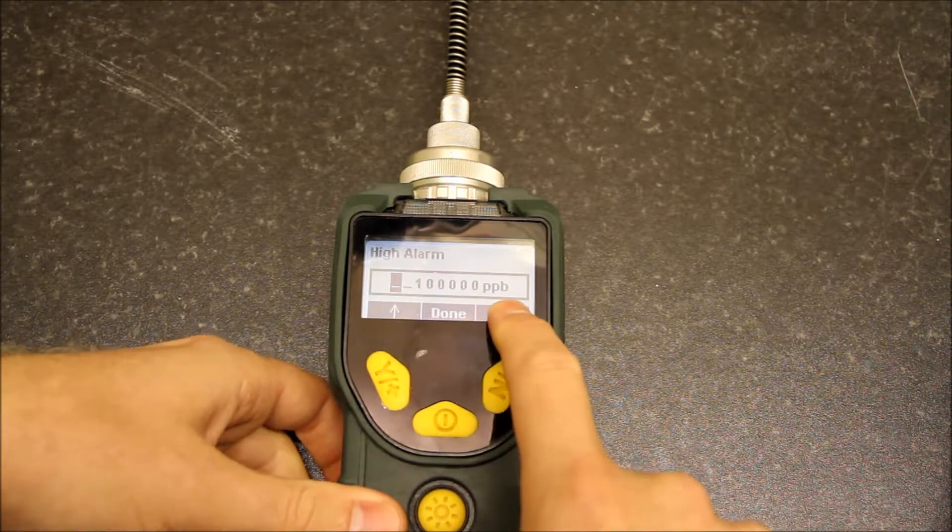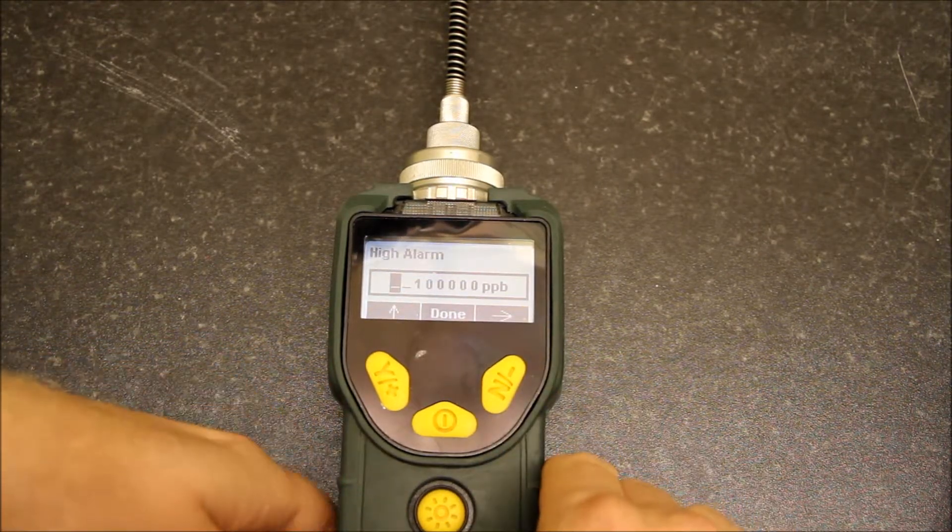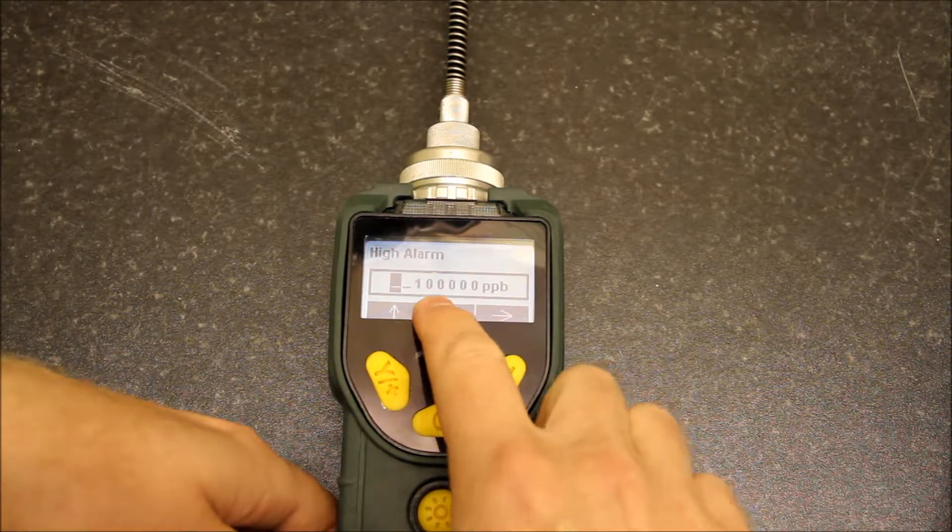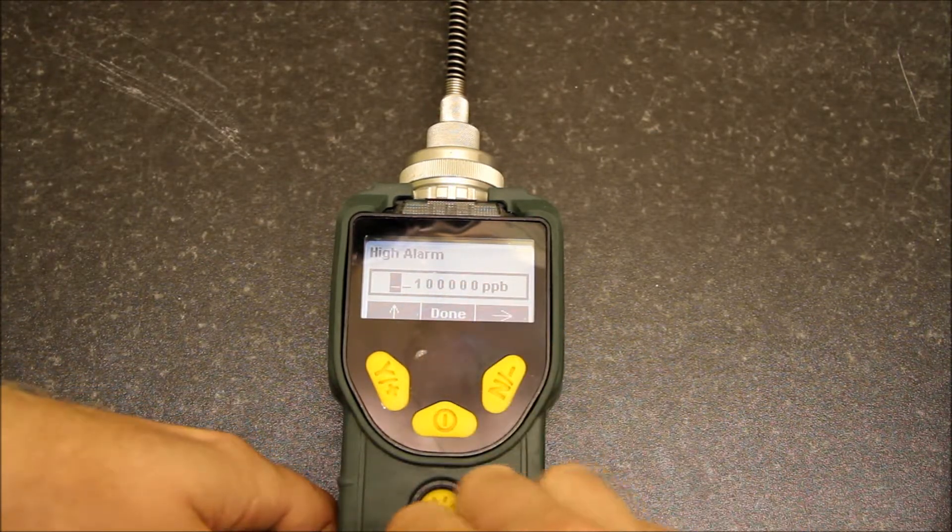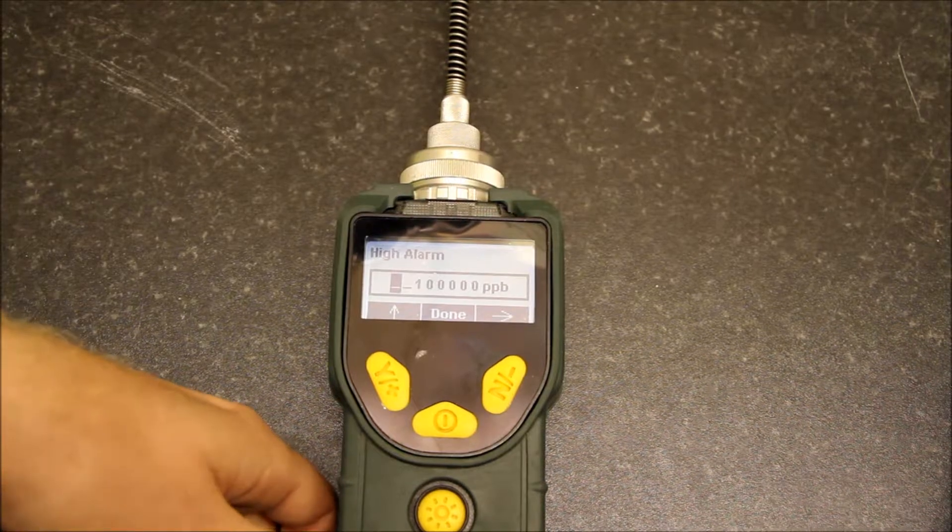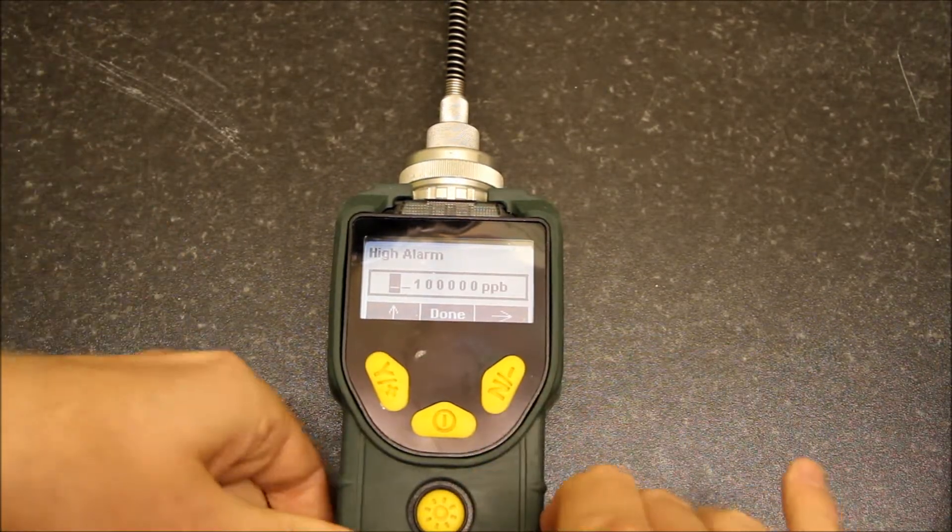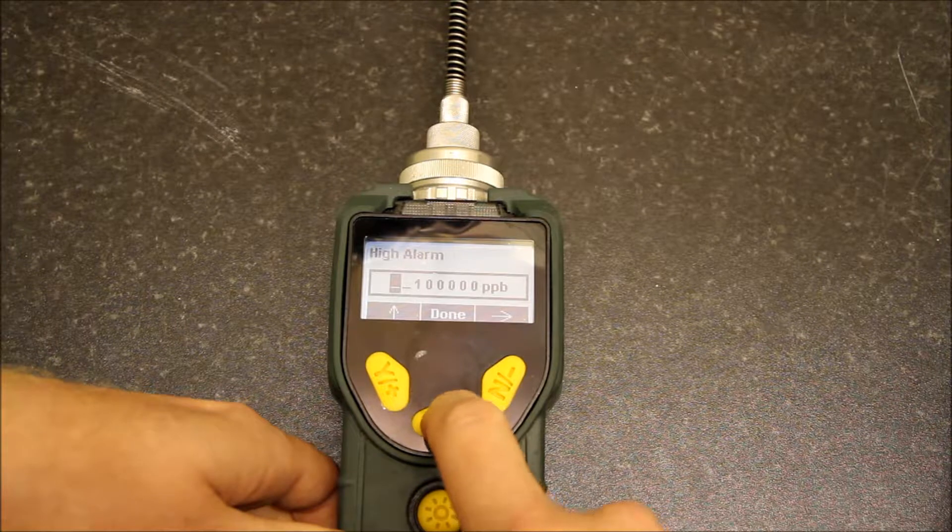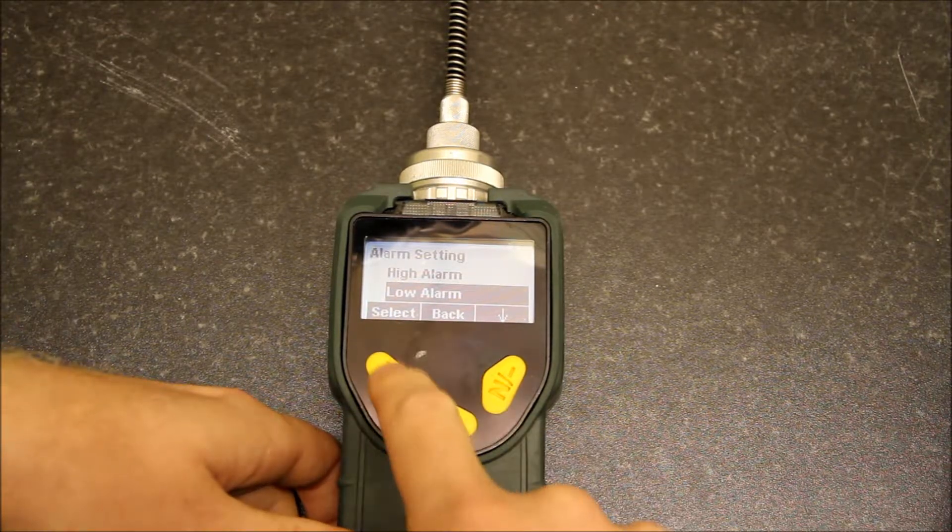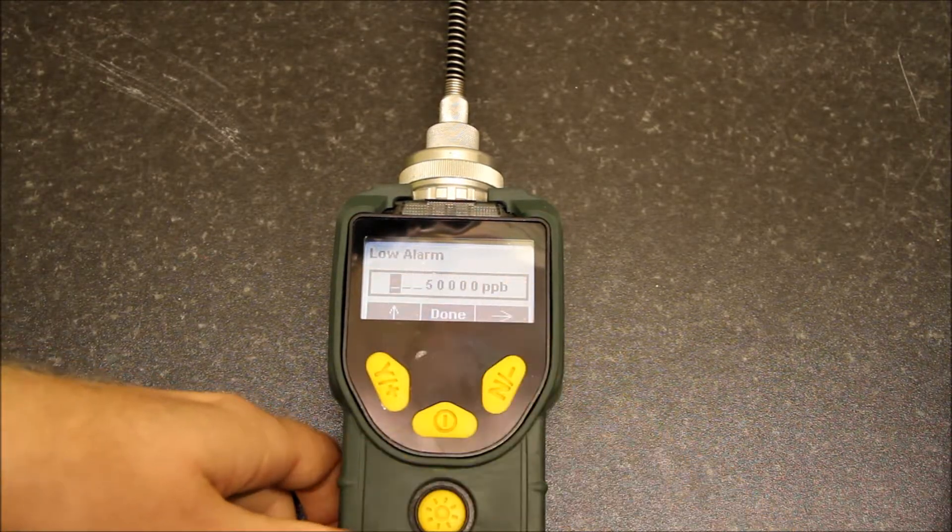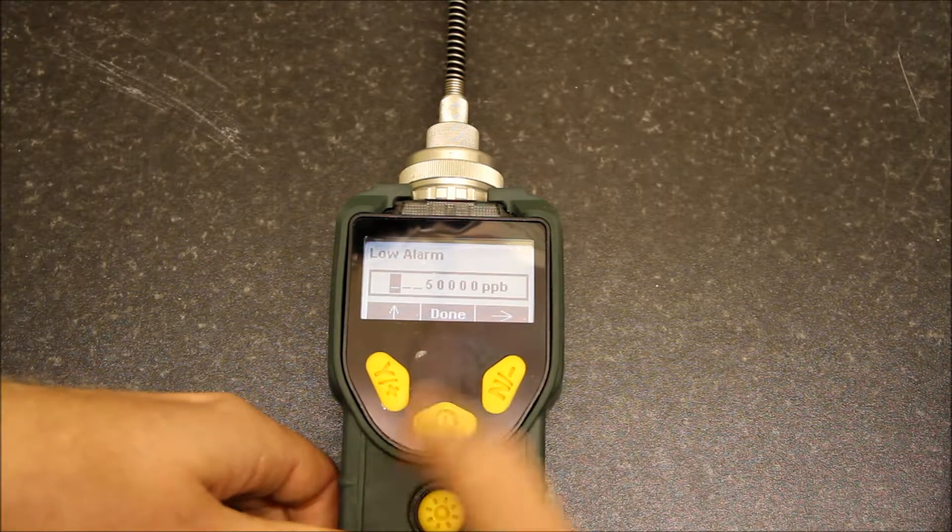You can change this to whatever you want. If you change it to all zeros, you won't have an alarm. Low alarm is the same, set at 50 ppm. Change it to all zeros and you won't have an alarm.